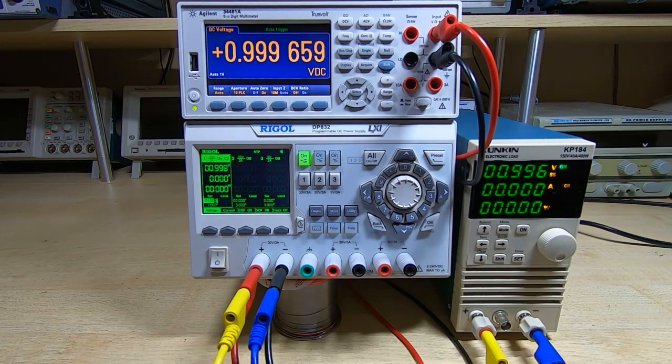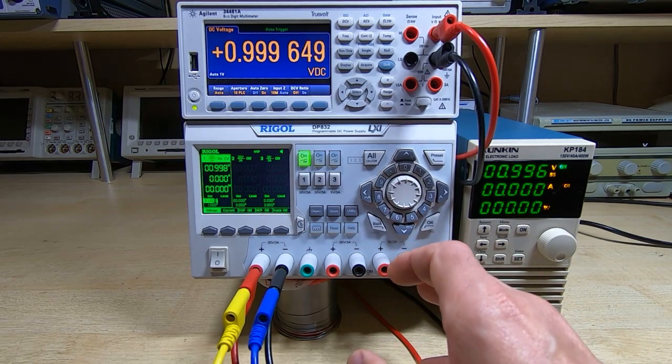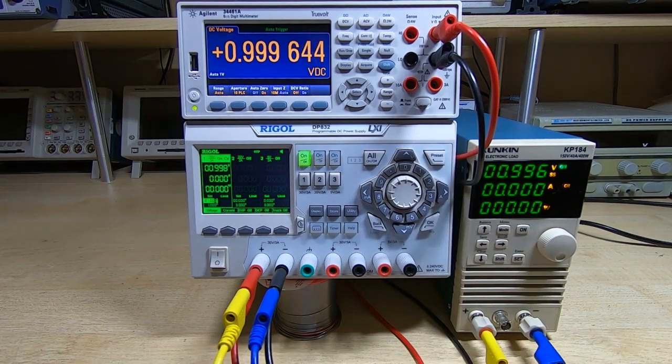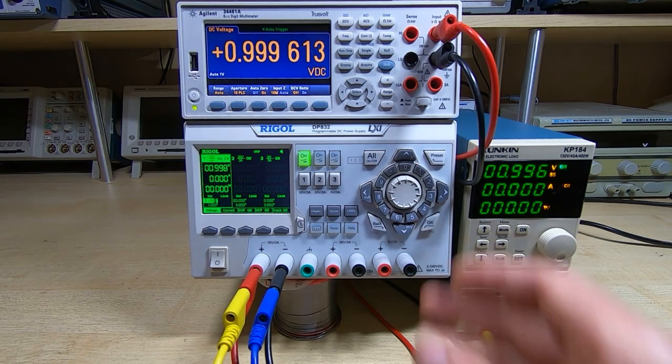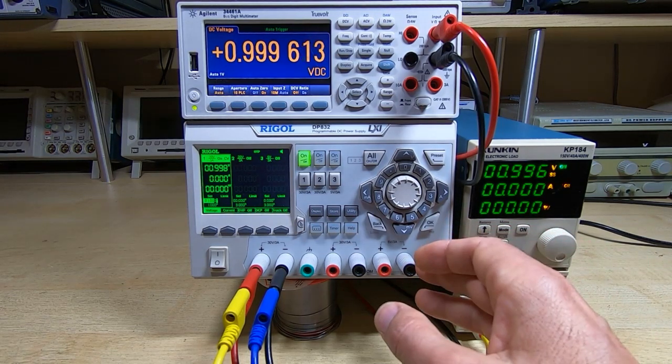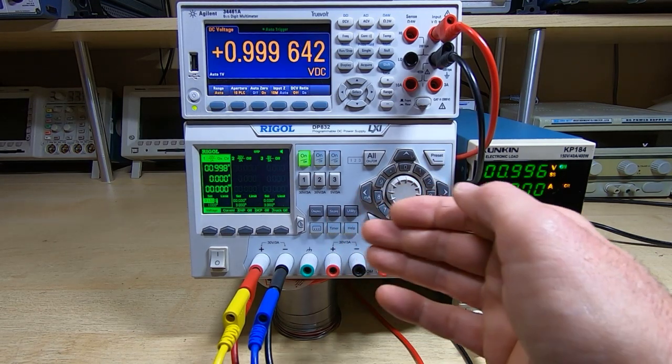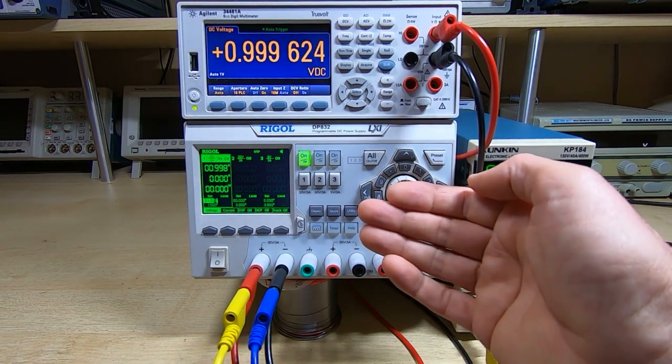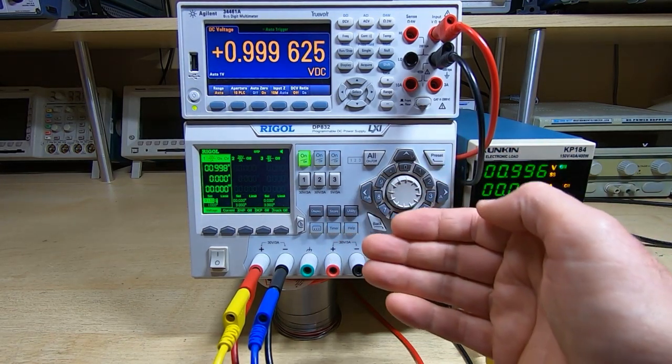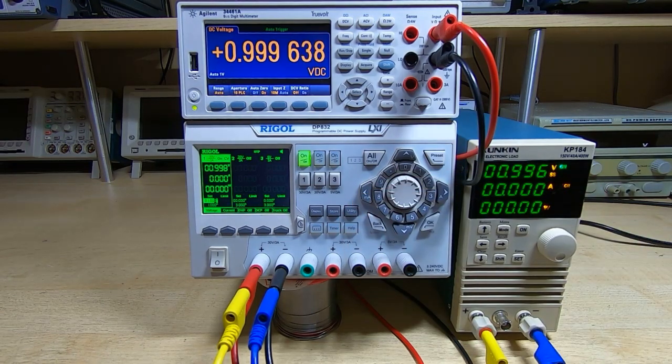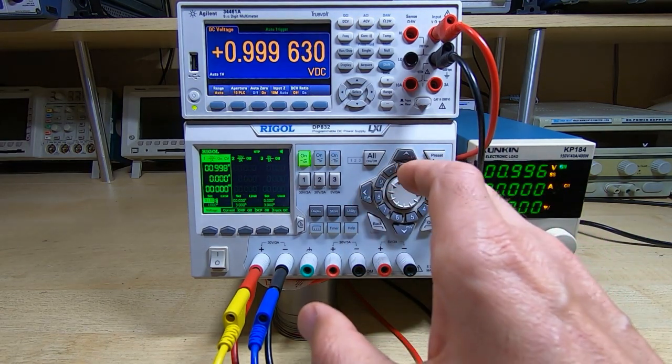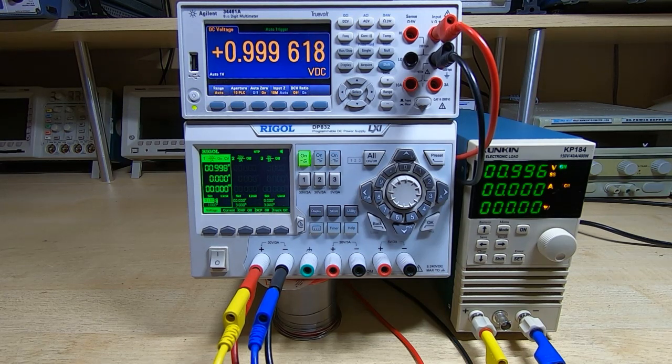Either way, if you have a Rigol DP832 and you've got this problem of it constantly resetting itself, then if you watch my previous videos in this series, it's a very easy fix to apply. You can do it in just 15-20 minutes. You don't need to take the entire front board out; you can just unscrew the front panel, fold it down, and then solder the capacitor in place. As I say, it does seem at the moment to have been a 100% successful repair.